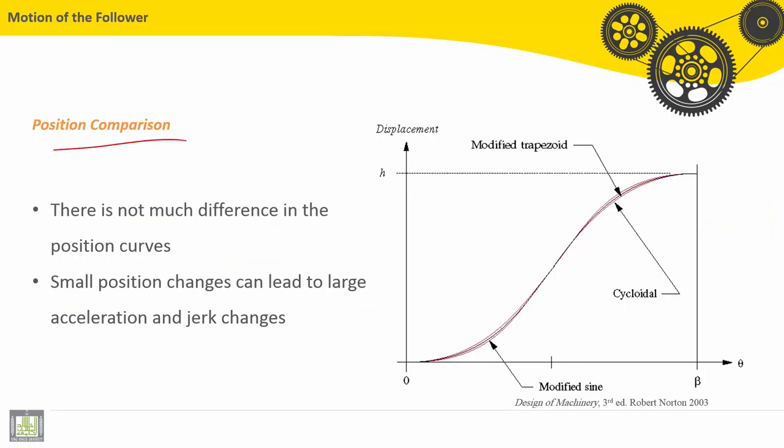Let's see now position comparison. There is not much difference in the position curve - you can see very small variation. This small variation here includes big variation in acceleration, velocity, and especially in jerk. Small position changes can lead to large acceleration and jerk changes.